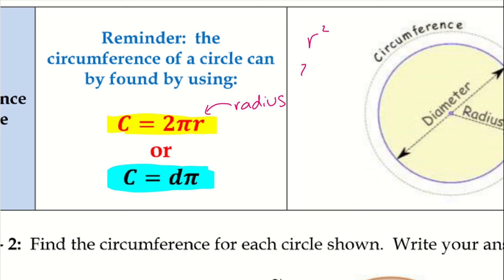R squared and 2R are two different things. R squared is R times R, whereas 2R is just 2 multiplied by R.